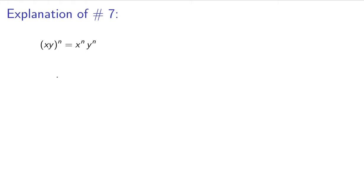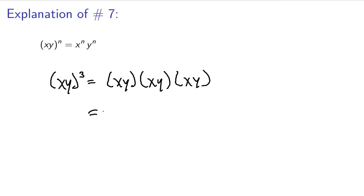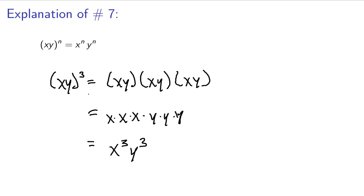Let's look at this in a little bit more detail — why this works out the way it does. If we have the quantity x times y, cubed, that would be the same thing as xy times xy times xy. Remember that with multiplication, order doesn't matter, so you have three x's and three y's. The three ended up distributing to the x and to the y. If we have three groups, each one having exactly one x and one y, that means we have a total of three x's and three y's. So if you have n groups, each with exactly one x and one y, you have a total of n x's and n y's — that's why it works.